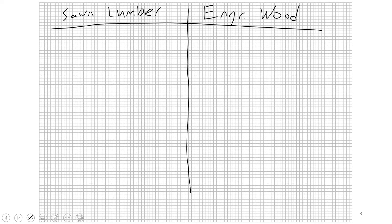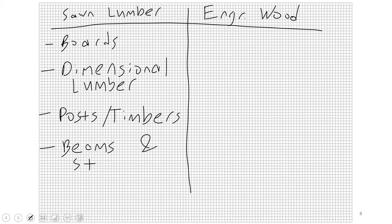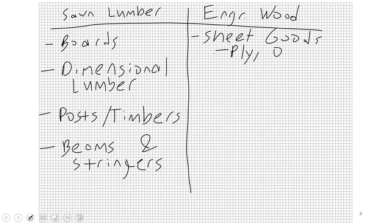The general subcategories of sawn lumber include boards, dimensional lumber, posts and timbers, and beams and stringers. Then there are a myriad of various engineered wood products, such as sheet goods — things like plywood, OSB (oriented strand board), and particle board.